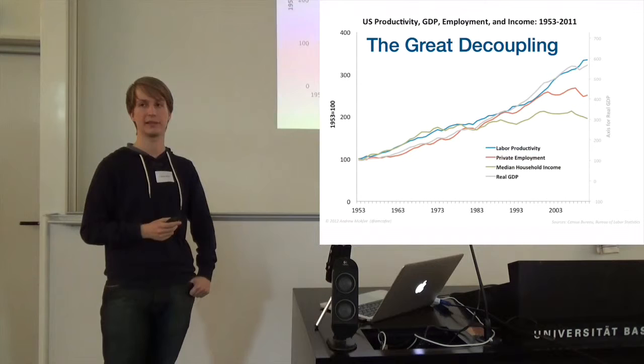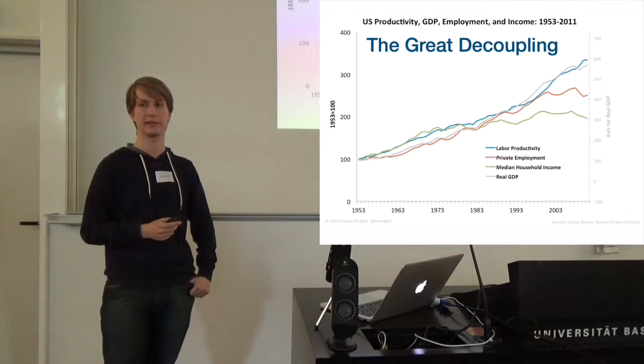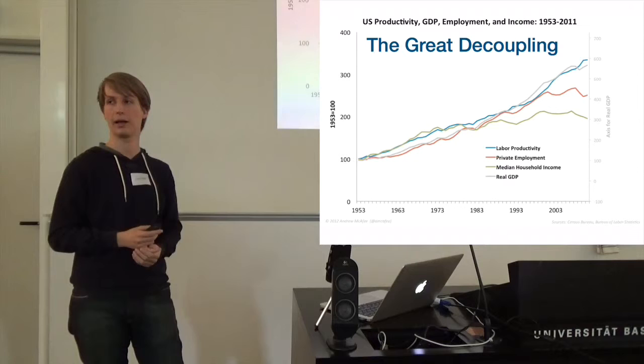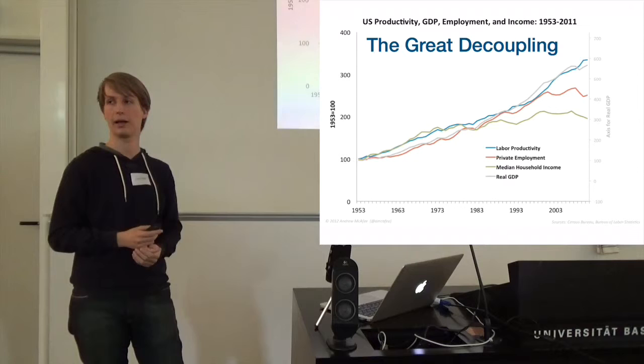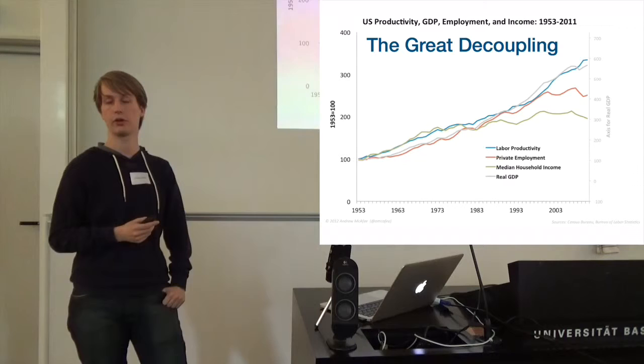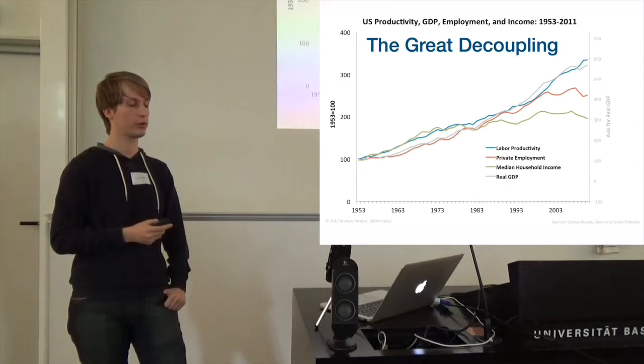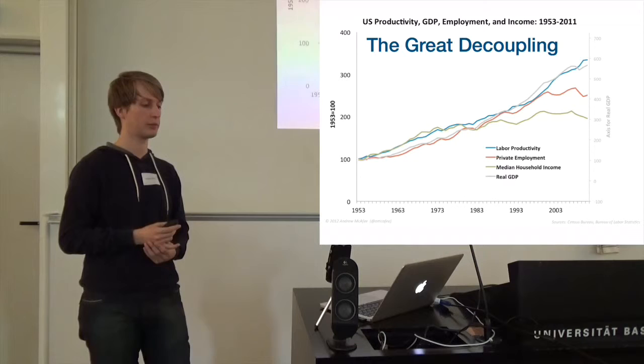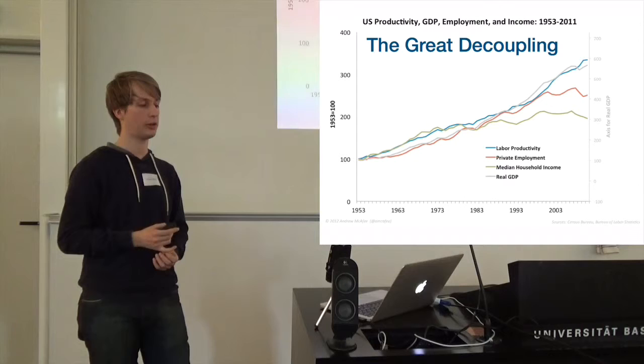Some notable economists think that we are already seeing the first sign of this trend towards increased automization. So, this is a graph used by the MIT economist Andrew McAfee, and here we see four quantities and how they've developed in the past. So, both GDP, these numbers here refer to the US, and also labor productivity, this refers to how many goods are produced by one hour of work. Both of these figures have been increasing steeply in the past, and they were correlated. And they were also correlated with the figures for private employment, but recently private employment started to trail behind. Also, medium household income stagnated pretty much,